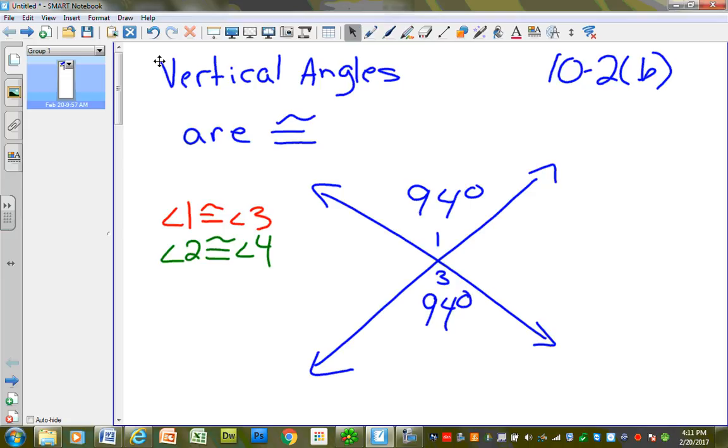Now, I can't really cover this up, but if I would erase this right here, and I'll redraw it in a second. If I would erase that, and if you just look at this part right here, doesn't that make a straight line? And how many degrees are in a straight line? That's right, there's 180.